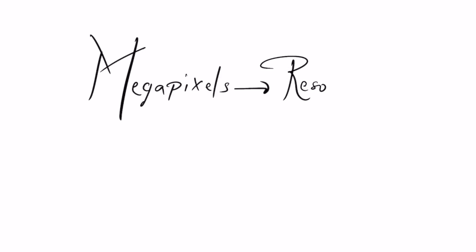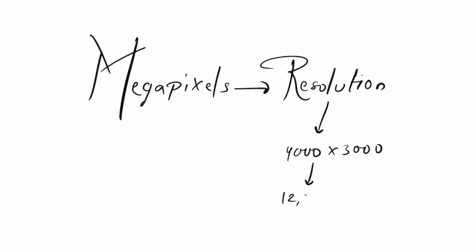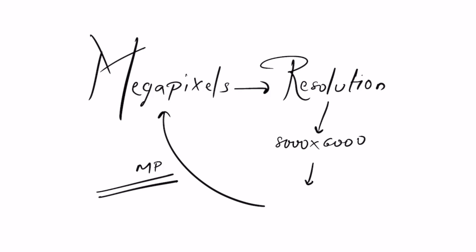So without wasting any time, let's get started. First, let's talk about megapixels. Basically, megapixels means resolution. Suppose the resolution of the image is 4000 by 3000 — then it is 12 million pixels, meaning 12 megapixels. If it is 8000 by 6000, then it is 48 megapixels. Higher the megapixels, more is the resolution.